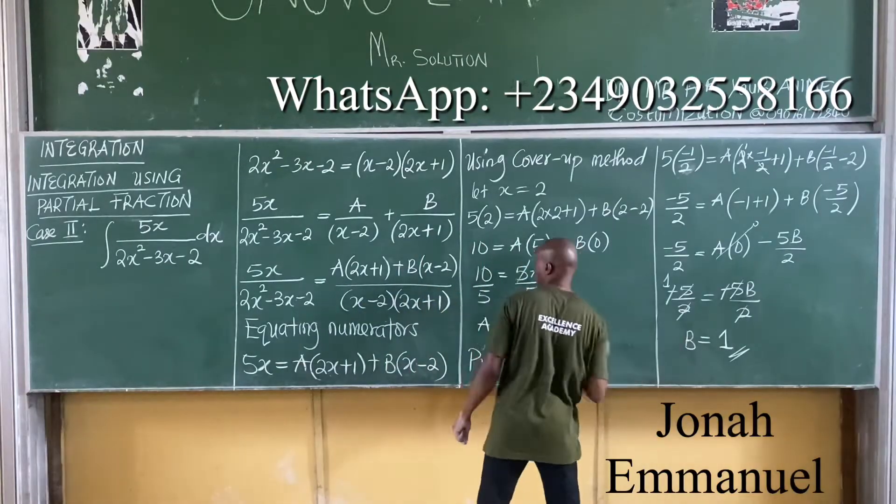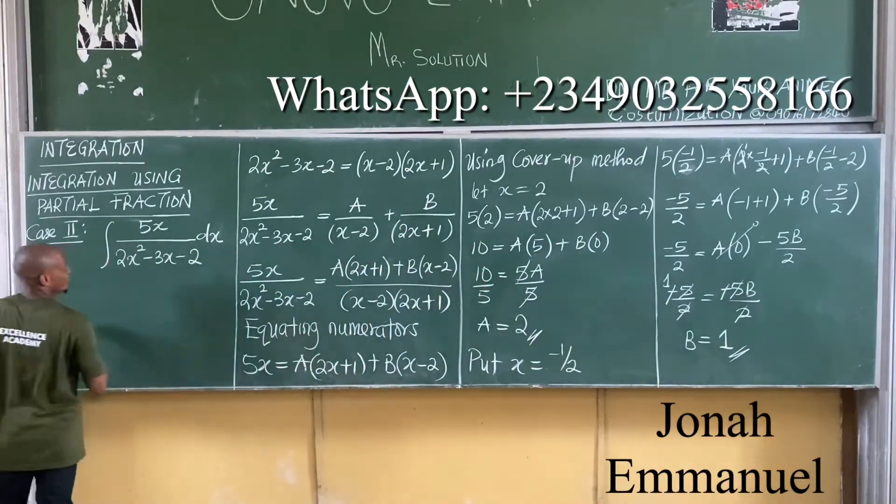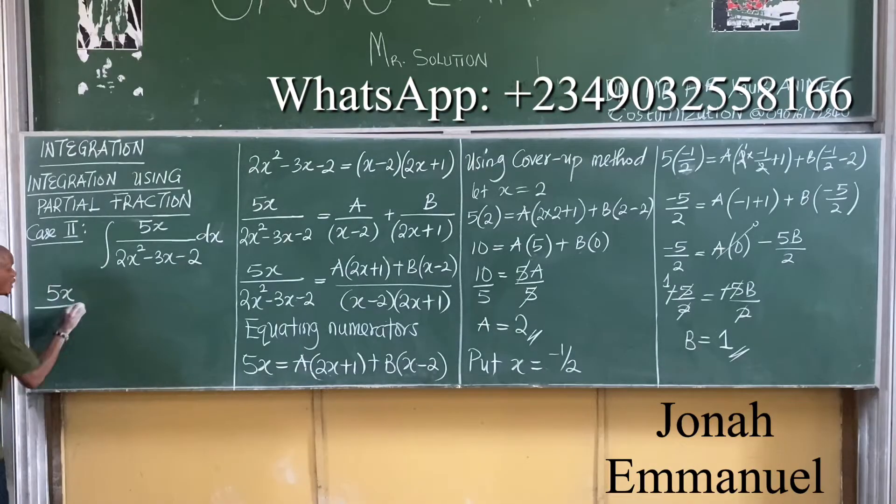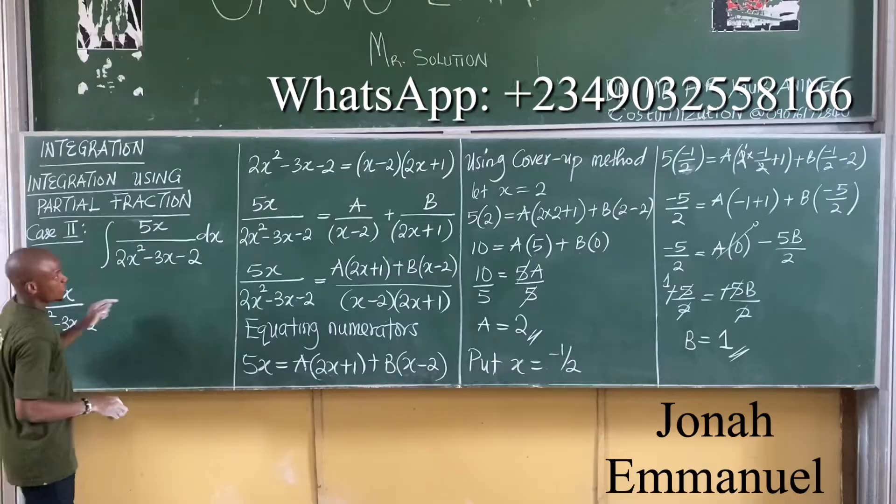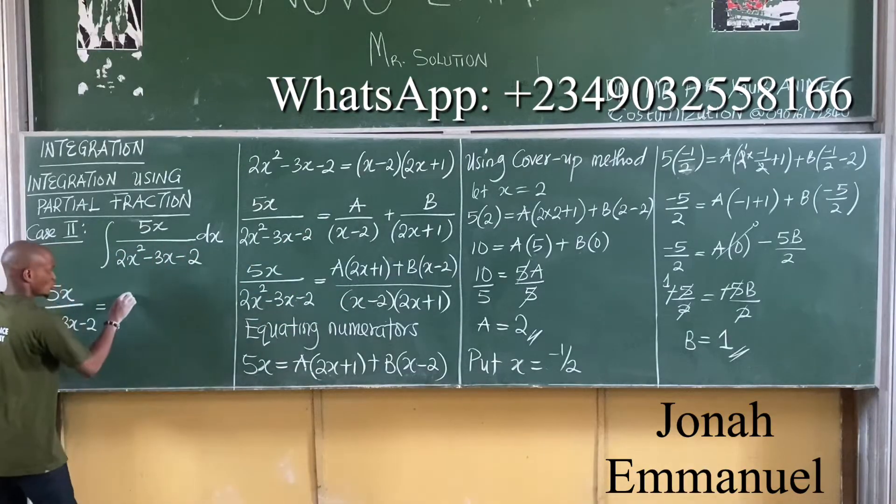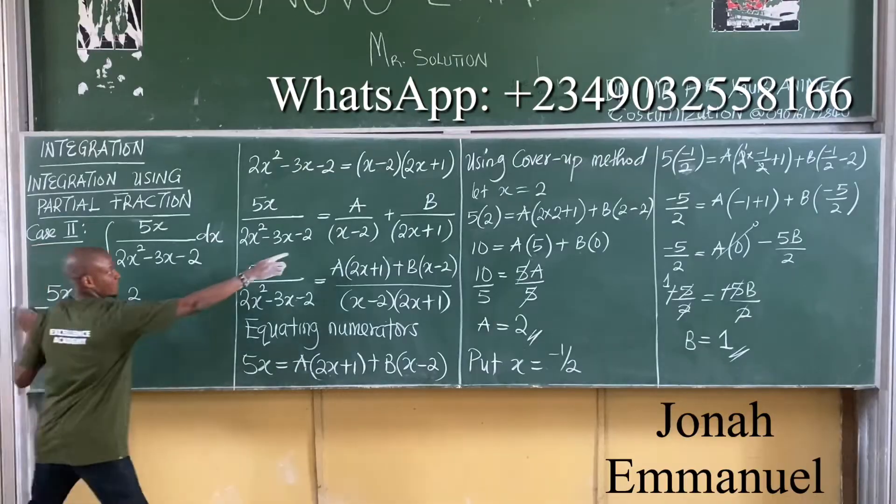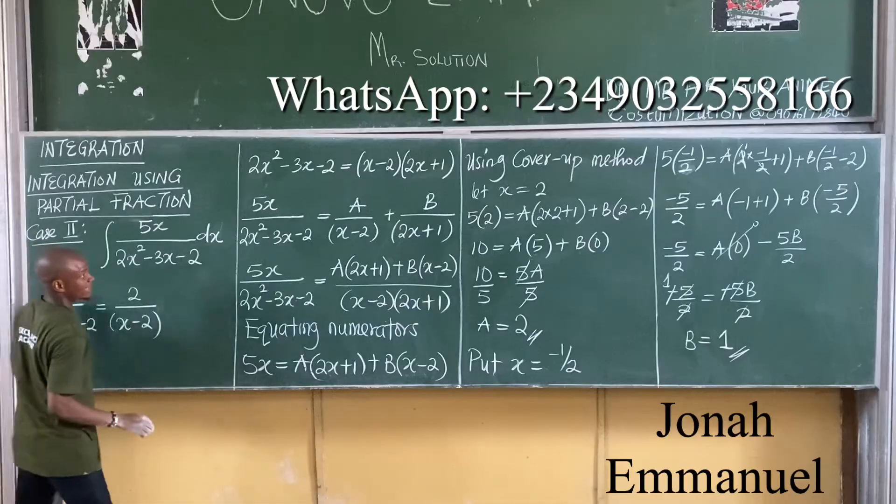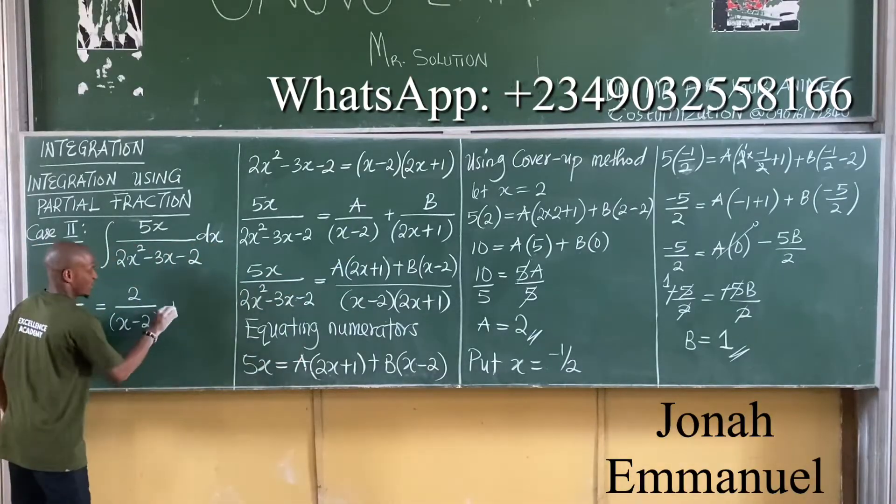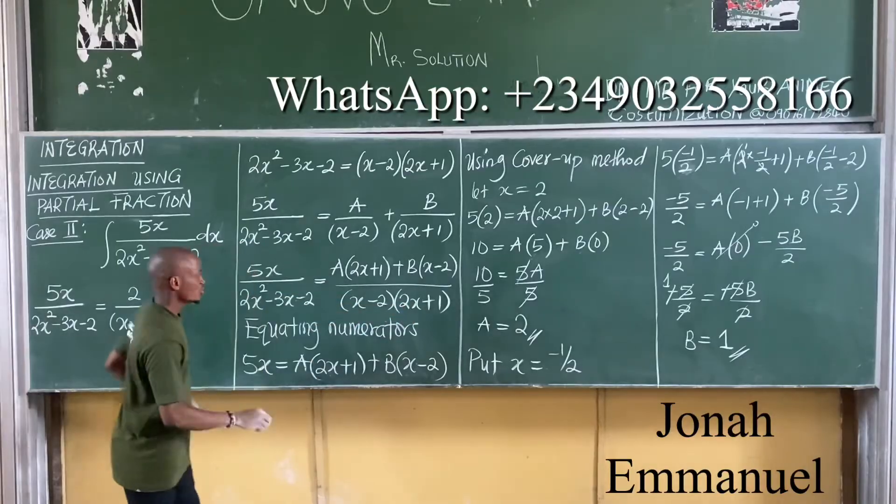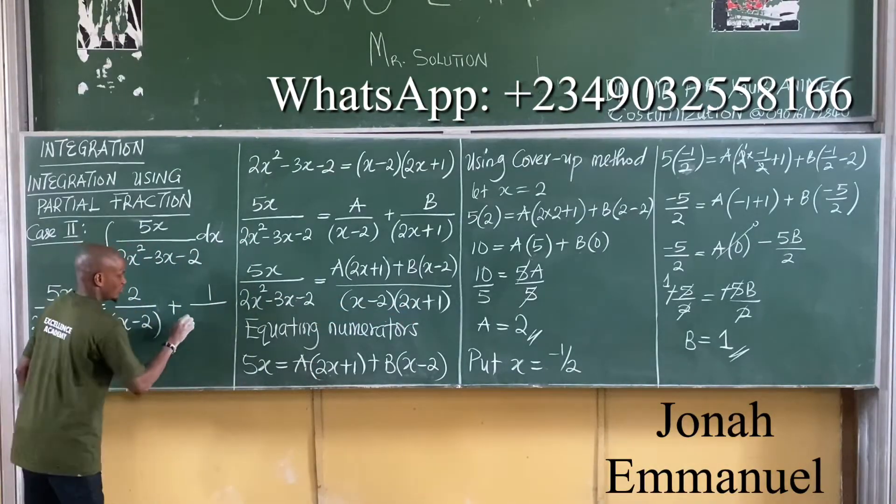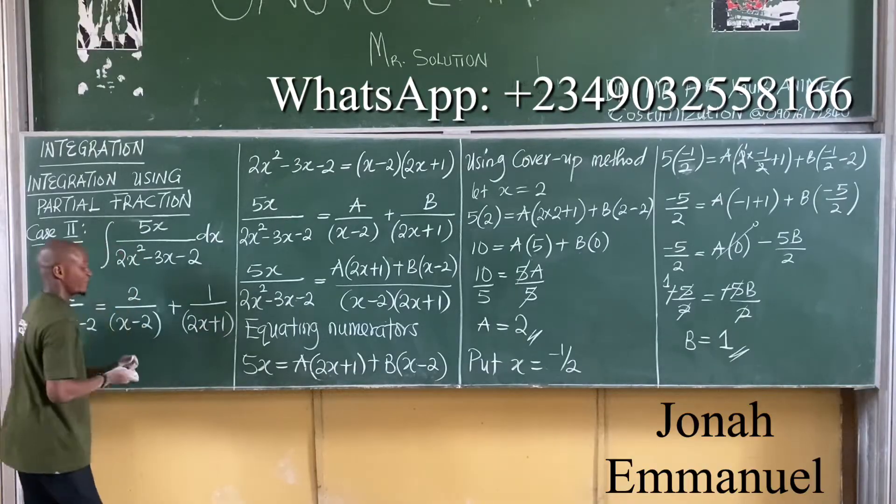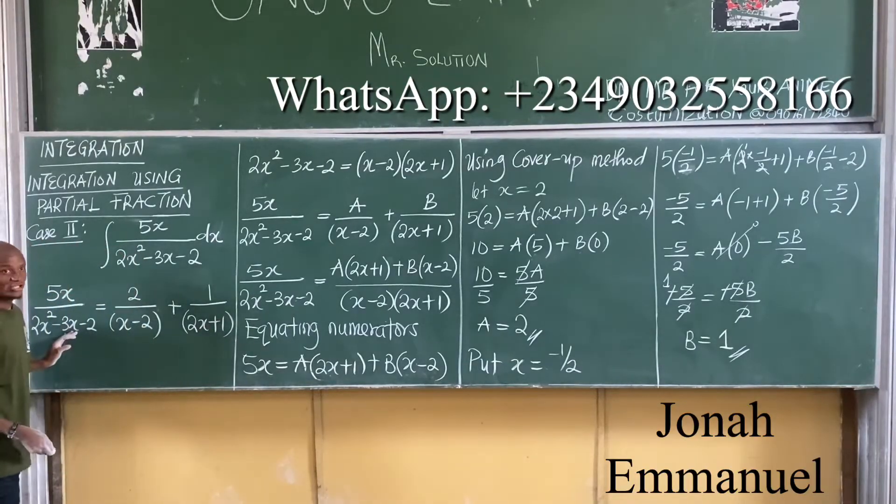If I put these two values here, I will now have that 5x all over 2x squared minus 3x minus 2 is equal to A, which is 2, so it becomes 2 all over x minus 2. Next up, plus B becomes plus, B is 1, so it becomes 1 all over 2x plus 1. So if I resolve this into partial fraction, I will have this.